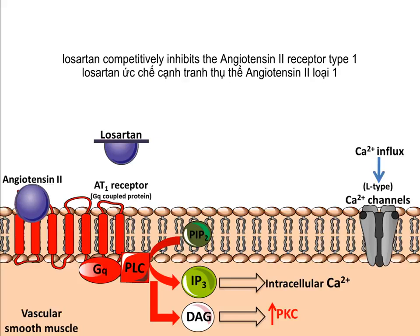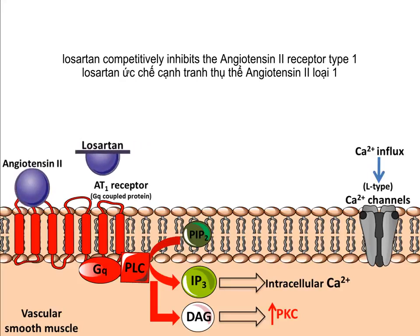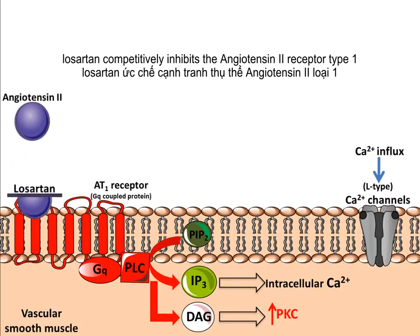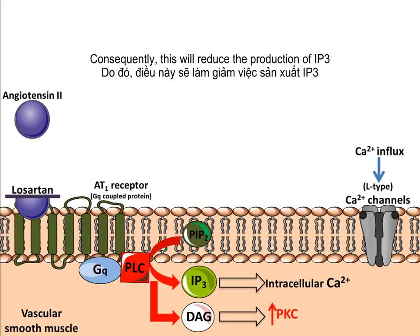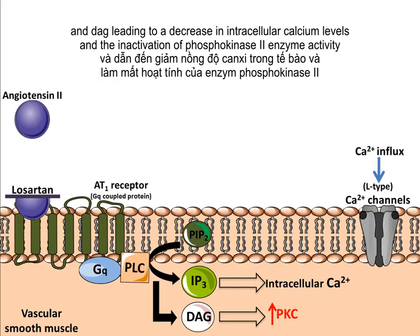Losartan competitively inhibits the angiotensin 2 receptor type 1 on the vascular smooth muscle membrane, which inactivates the G protein on this membrane. Consequently, this will reduce the production of IP3 and DAG.